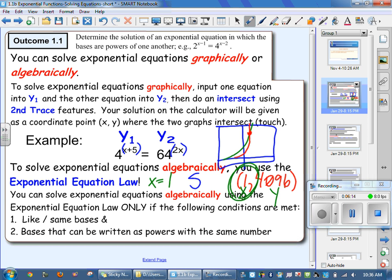So you can only use it if it solves two conditions. It must meet these two conditions. They have to have like bases, so the base numbers have to be the same. Is 4 and 64 the same number? No. That means I have to convert one of the numbers to the same base number.